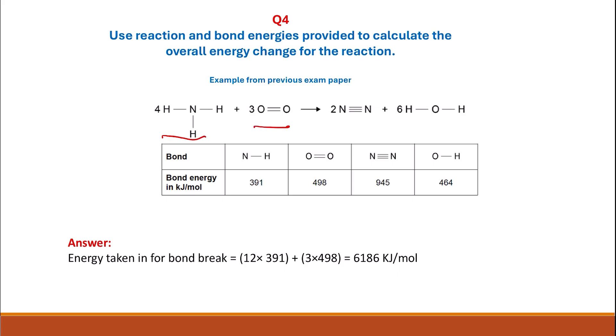We have an ammonia molecule. Each ammonia molecule has three N-H bonds and there are four of them, so in total there are 12 N-H bonds. The bond energy for N-H is 391, so we multiply 12 times 391. For the oxygen we have three moles and each one has one O=O bond with 498. You multiply 3 times 498. The total is 6186 kilojoules per mole.